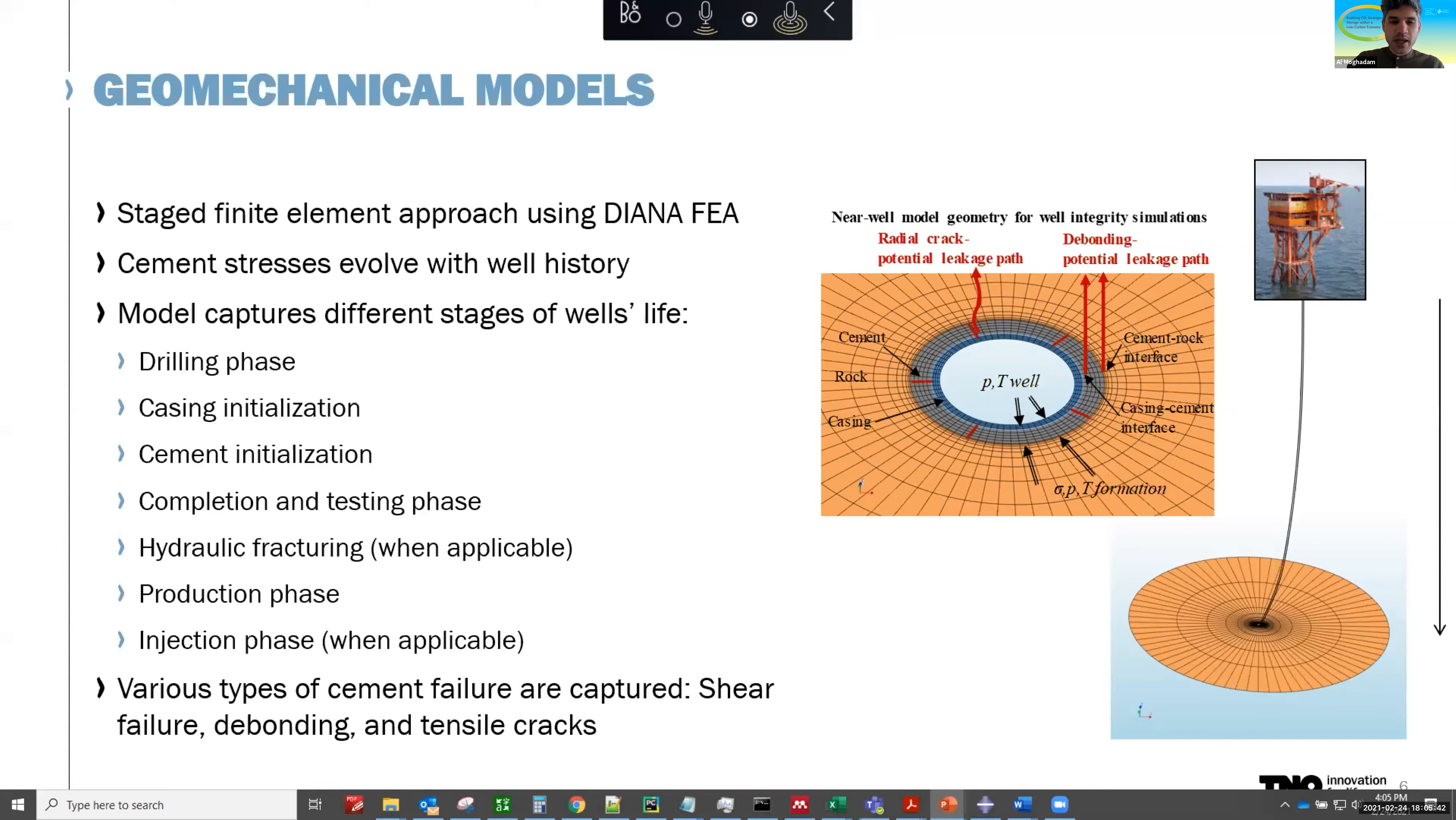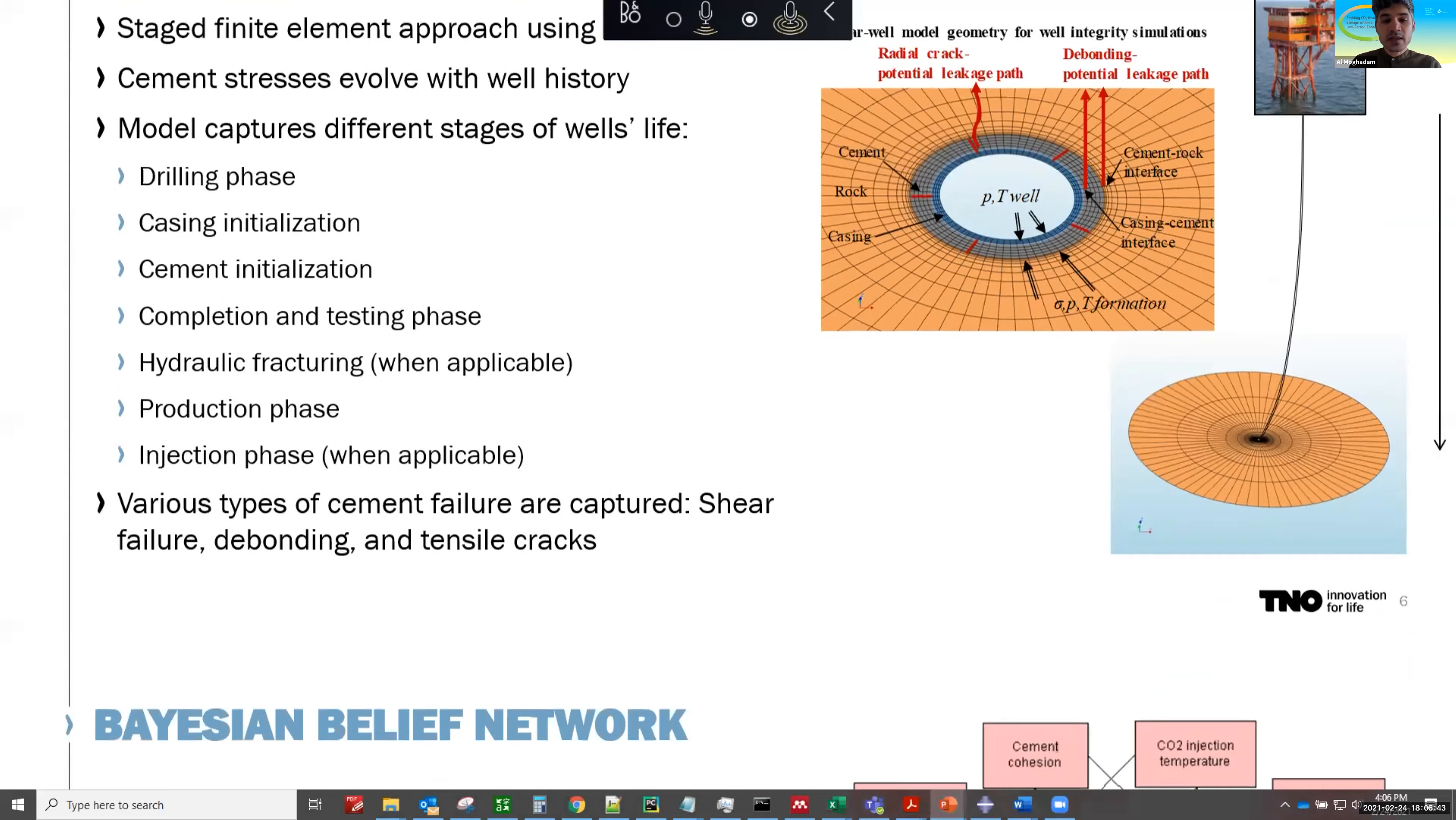So this data and these results have been used to build essentially the geomechanical models that you can see here. So the idea is that we'd have a well and we can take a slice at a certain depth and create a finite element model. We have the formation, we have the casing and cement and so on. And we've done this using Diana finite element package. But here we really need to track cement stress history to understand once we start injecting CO2, essentially how that cement is going to react. So we need to essentially start from a drilling operation, putting the casing in, cementation and completion, if hydraulic fracturing happens, production phase, and finally, in case of a depleted reservoir, we have CO2 injection phase. So all of this needs to be captured. There's a lot of detail in the model I won't bore you with. But at the end, we can know whether the debonding could occur, what kind of apertures to expect, whether shear failure is occurring and so on.